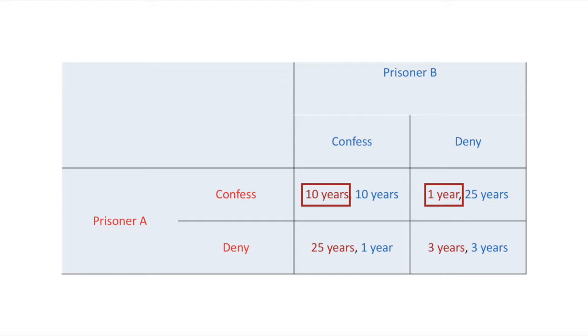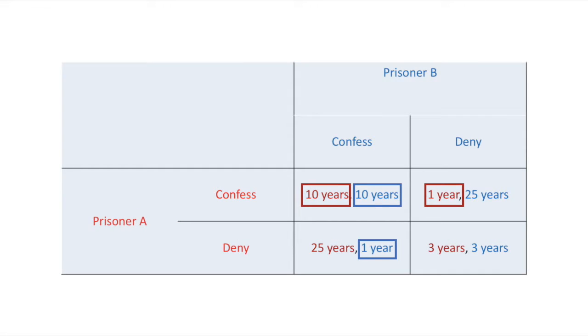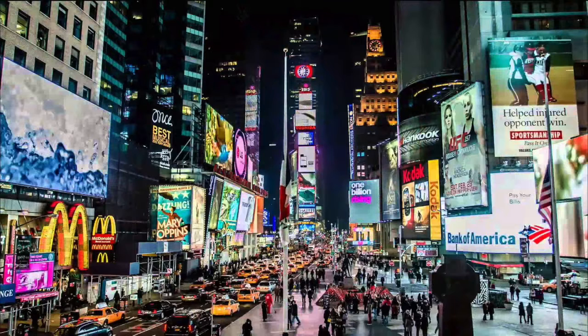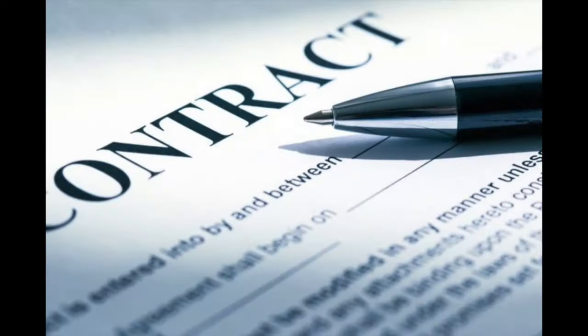Similarly, we can do the same analysis for Prisoner B and see that he also has a dominant strategy of confessing. Therefore, we can predict that both players will confess, meaning the Nash Equilibrium is both Prisoner A and Prisoner B confessing. This is a Nash Equilibrium since if either player switches their strategy to deny, they will end up with more jail time. Real-world examples include deciding how much advertising money competing firms should spend, setting prices, or deciding whether to stick to an agreed-upon contract.